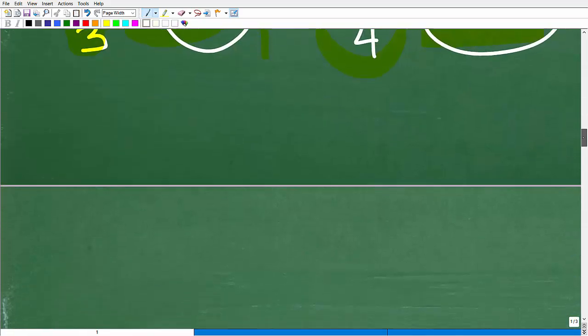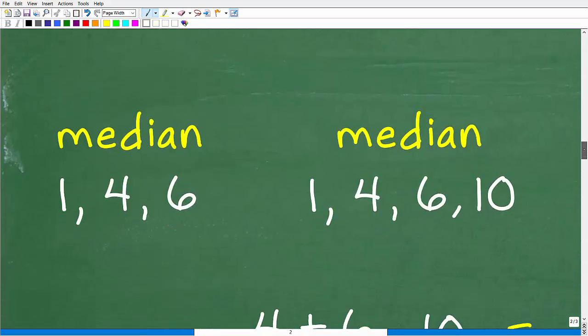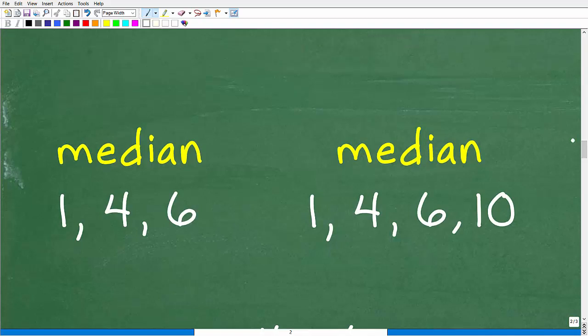And another way we can measure information or data is the median. And the median oftentimes is the better approach. So here is our same set of data. So what is the median of 1, 4, and 6? And then we want to figure out the median of 1, 4, 6, and 10.